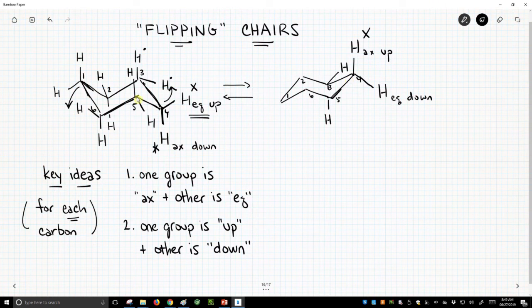On carbon five, very similarly, this particular hydrogen, it is axial up. It will now be equatorial up. And this hydrogen is equatorial down. It's still down, but now it's axial down. I'm going to go ahead and go around and fill in all the other hydrogens.